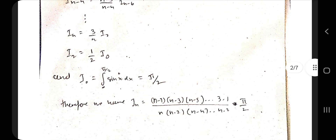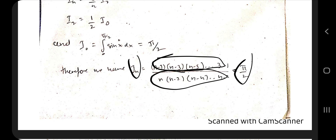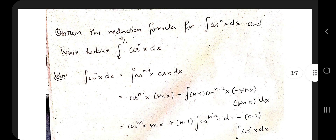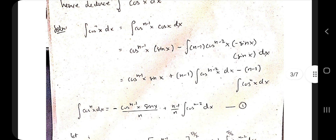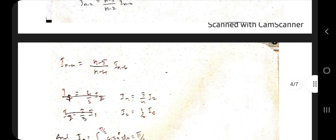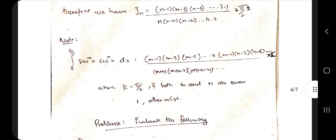If n is even, we keep reducing until we reach I_0. Substituting: sin^0(x) = 1, so I_0 = integral of 1 dx from 0 to π/2, which gives π/2. The final I_n formula has numerators for odd numbers and denominators for even numbers, multiplied by π/2 for the even case. The same approach applies to cos^n(x) — just replace sin(x) with cos(x), and the results are analogous.